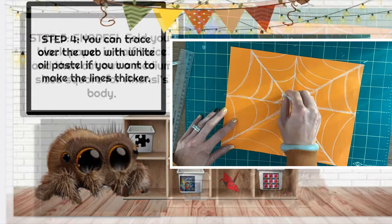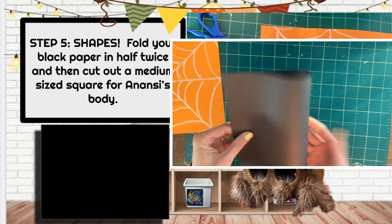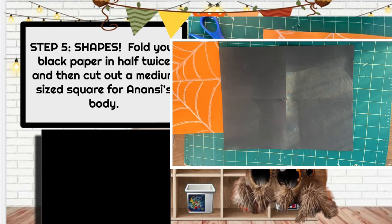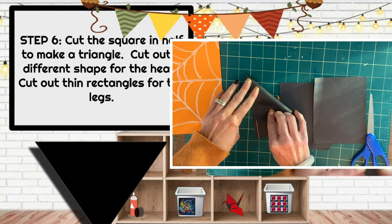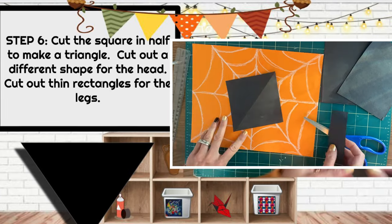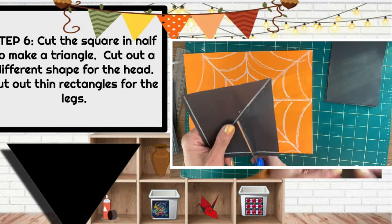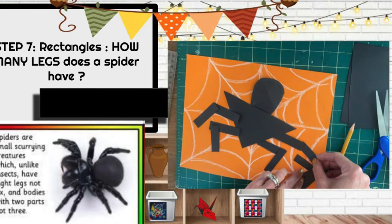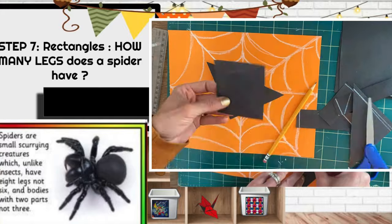Now it's time to make our spider's body. I took a black piece of paper, folded it in half twice, and then cut out two squares. Once I had the squares, I folded one and cut out a triangle for Anansi's body. Something cool I learned about spiders is that unlike insects they have eight legs instead of six, and their bodies have two parts, not three. So as long as you have two parts to your spider's body, it really doesn't matter what shape you use.